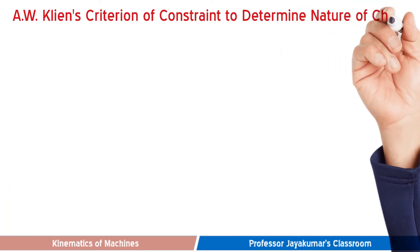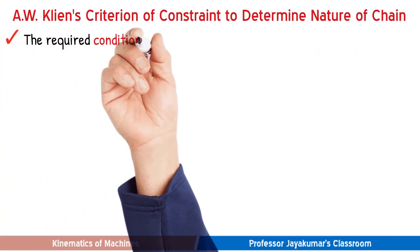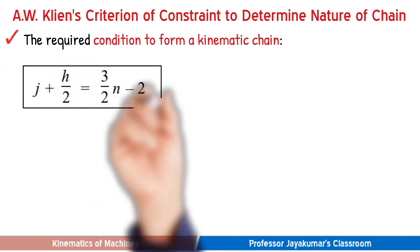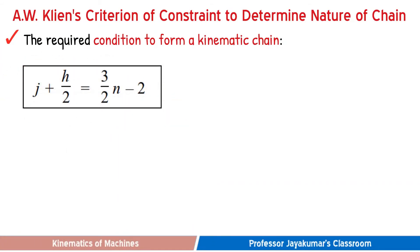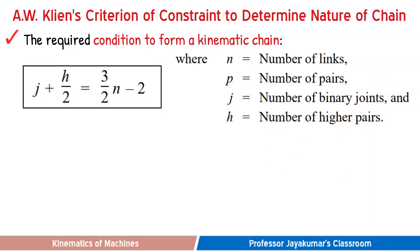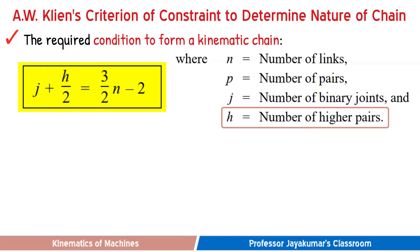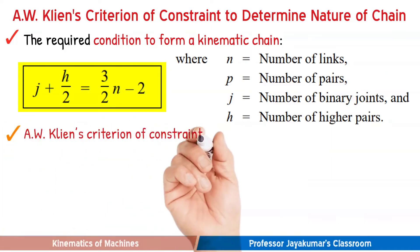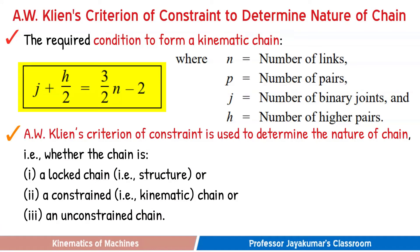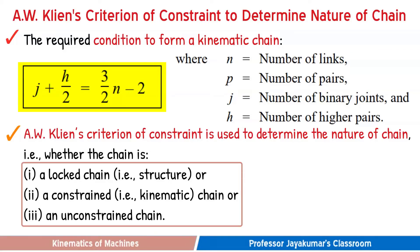If a chain having a number of links is given to us, how can we determine whether the given chain will form a kinematic chain or not? The required conditions to form a kinematic chain are: n = 2p − 4, and j + h/2 = (3/2)n − 2, where j refers to number of binary joints, h is the number of higher pairs, and n is the number of links. We have AW Klein's criterion of constraint to determine the nature of the chain — whether it will form a locked chain, a kinematic chain, or an unconstrained chain.